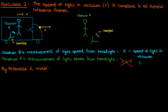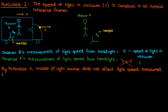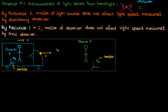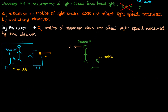Since the speed of light is constant in all inertial reference frames, the motion of the source of light does not affect the speed of light measured by a stationary observer according to postulate 2. In addition, combining postulate 2 with postulate 1, we can also say that the motion of the observer does not affect the speed of light measured by that observer. So if observer A was traveling at velocity V towards the stationary car, observer A would still perceive the light from the headlight to have a speed of C.